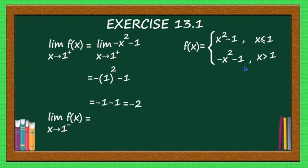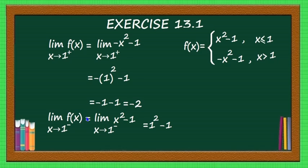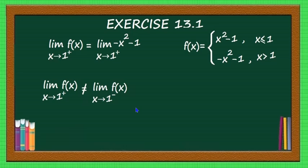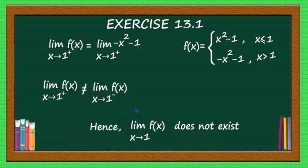Now find limit extending to 1 minus of f(x). Here 1 minus means less than 1, and when x is less than 1, the function is defined as x squared minus 1. So the limit extending to 1 minus is equal to limit of x squared minus 1. Put x equal to 1: 1 squared minus 1 equals 1 minus 1, which is equal to 0. The left-hand limit is 0 and the right-hand limit is minus 2 — they are not equal. Therefore, limit extending to 1 of f(x) does not exist.